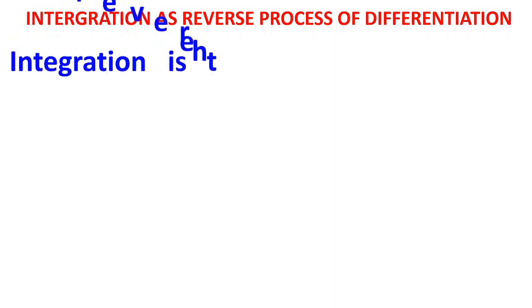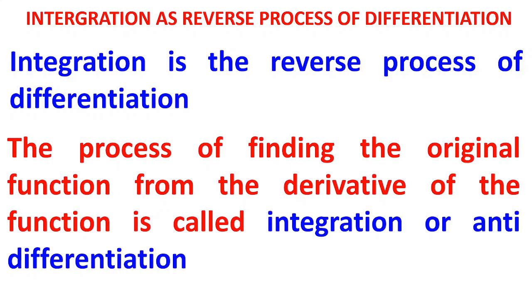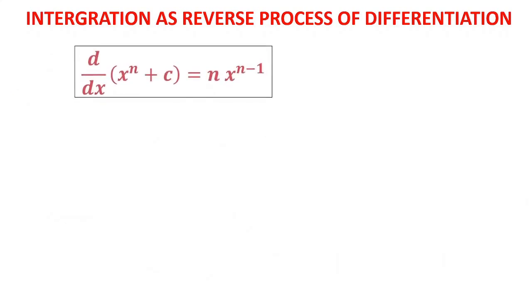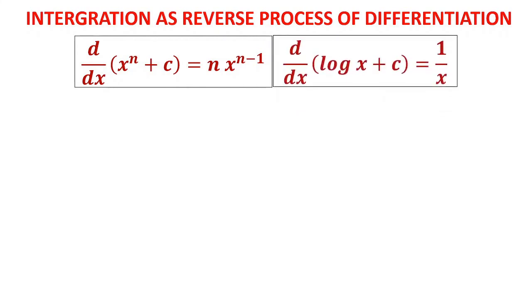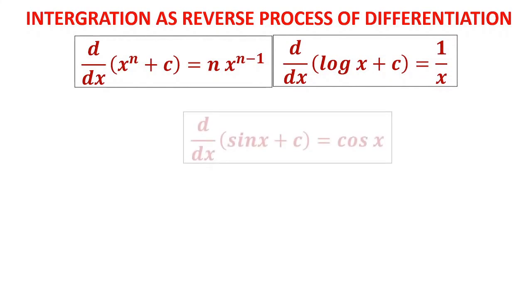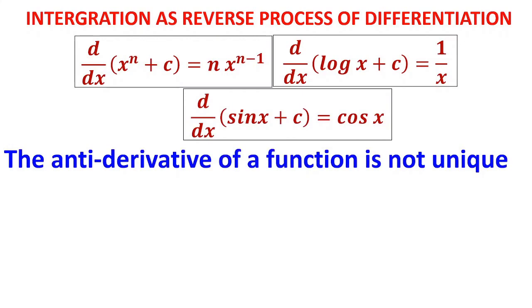Integration is the reverse process of differentiation — the process of finding the original function. We have d/dx of (xⁿ + c); since differentiation of c is zero, you get only n·xⁿ⁻¹. Similarly, differentiation of (log x + c) is 1/x, and differentiation of (sin x + c) is cos x.